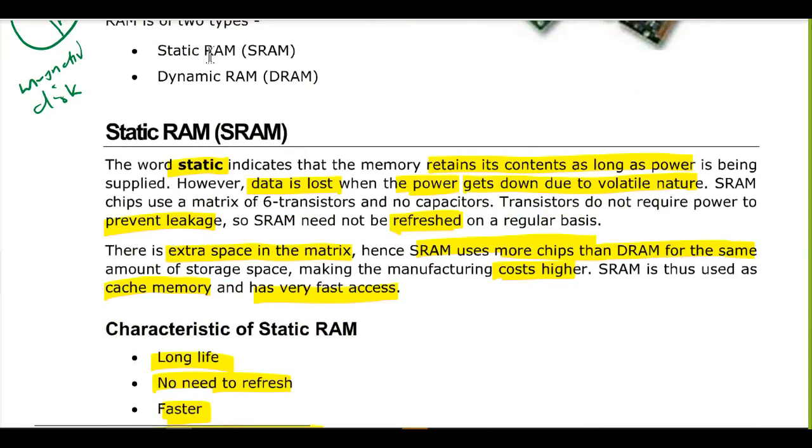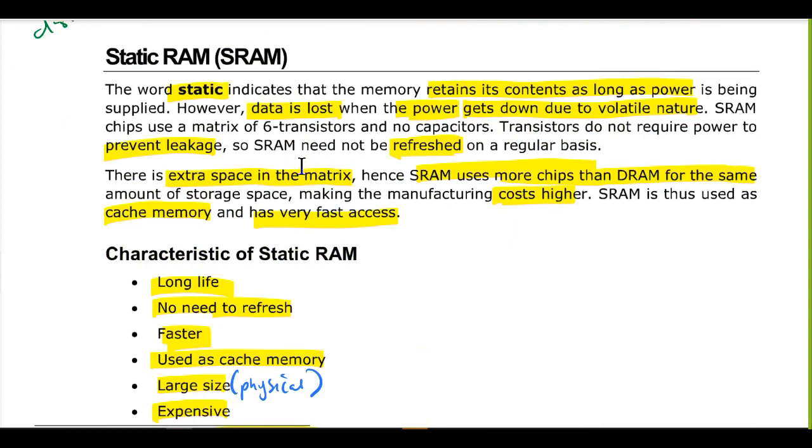We now discuss the two types, the static RAM and dynamic RAM. Let me say that the static RAM indicates that the memory retains its content as long as power is being supplied. However, data is lost when power gets down due to the volatile nature. This is the very common kind of RAM that we have. And we say that it uses a chip of matrix of six transistors and no capacitors. And therefore, transistors do not require power to prevent leakage. And so S-RAM does not need to be refreshed on a regular basis.